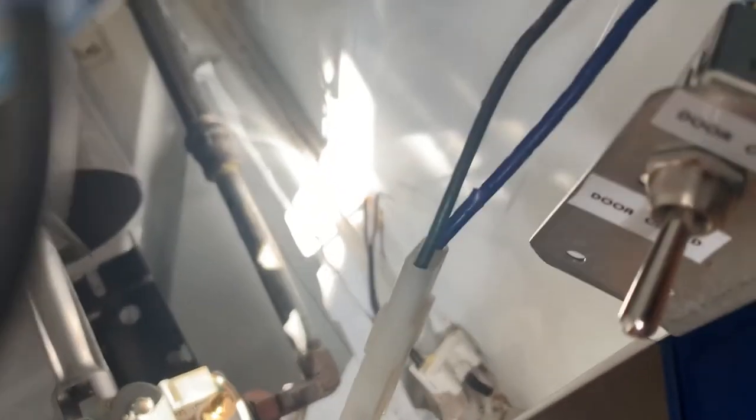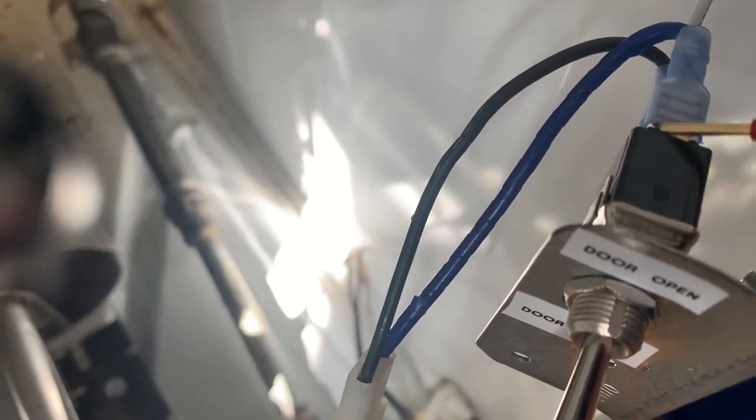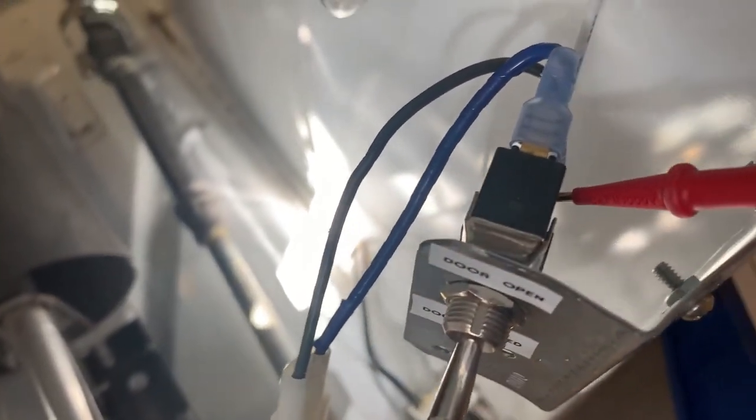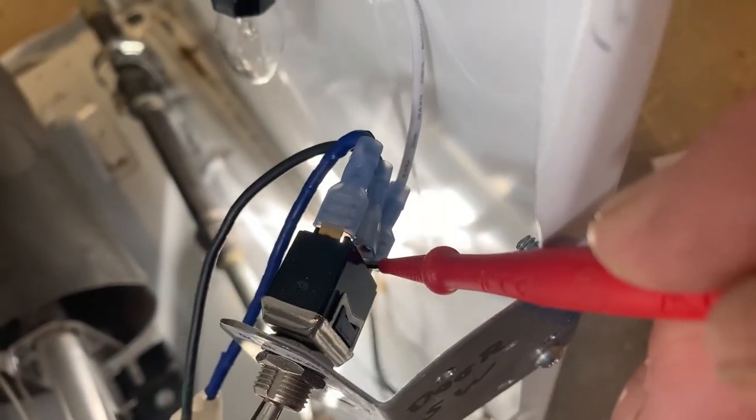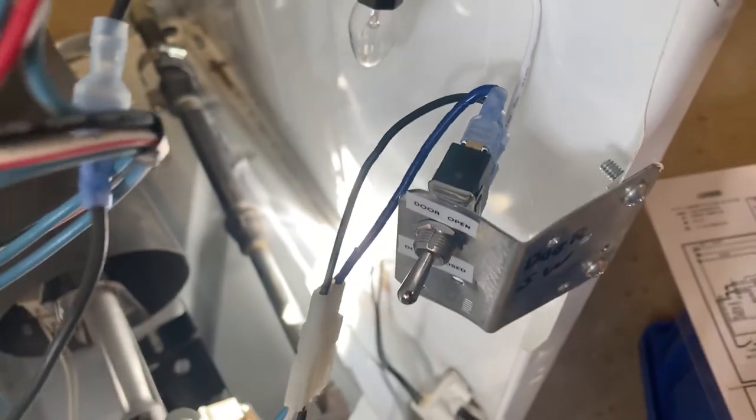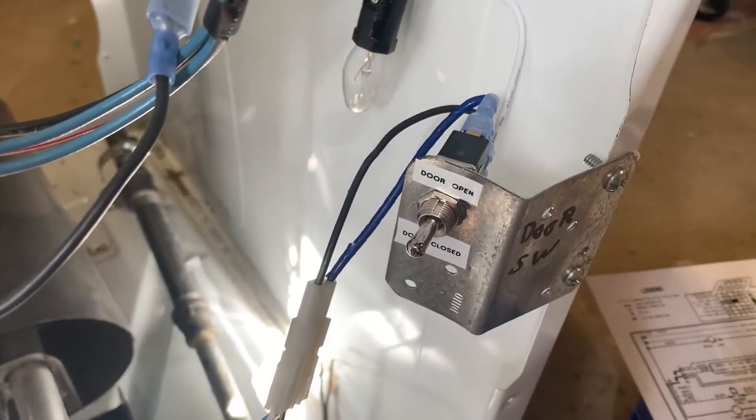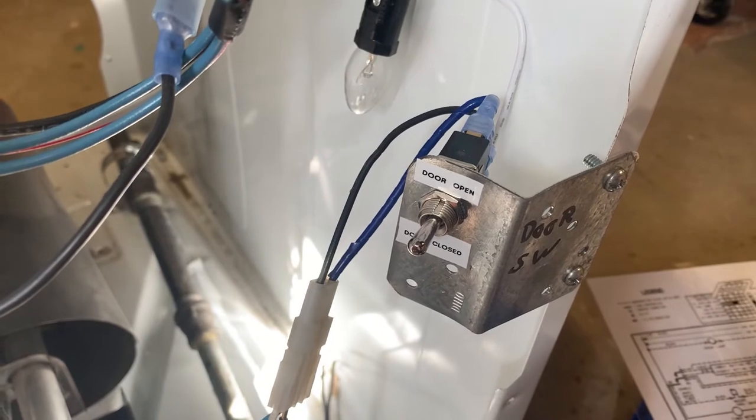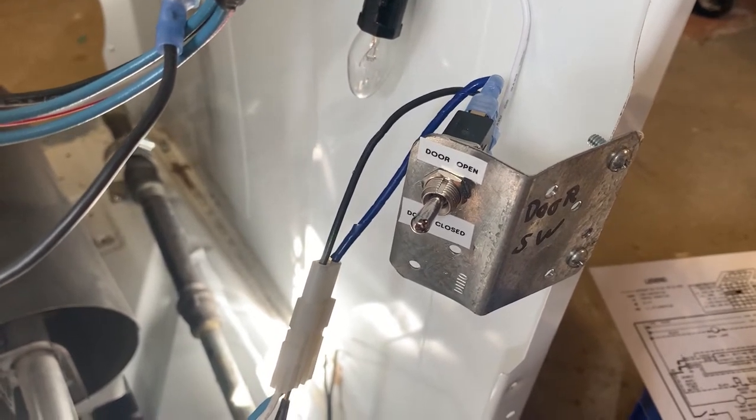Door closed, power is coming out here through blue. Door open, neutral is going out through white to the lamp. So let's look at how that applies to a switch that might be in your house.